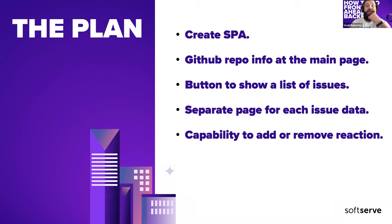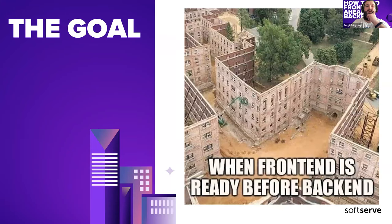The plan: we are going to create a single page application. On the main page, some GitHub repository brief information is going to be shown. On the same page there will be a button to show the list of issues from the same GitHub repository. Each issue's data is going to be presented by a separate route, and we will be able to react on each issue — add or undo our reaction. As a goal, I want to show every component of the application working without being connected to a real backend, and then we will connect it smoothly.